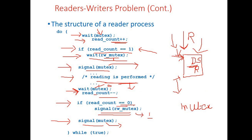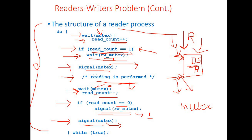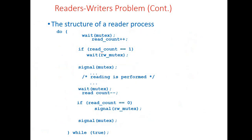In summary for the Readers-Writers Problem: the first reader entering the critical section acquires the lock (read_count equals 1), and the last reader coming out of the critical section releases the lock (read_count equals 0) using the signal function on rw_mutex.